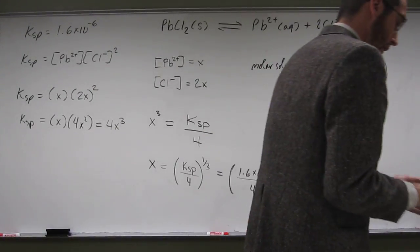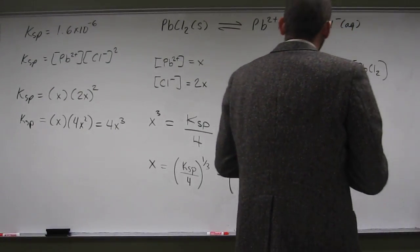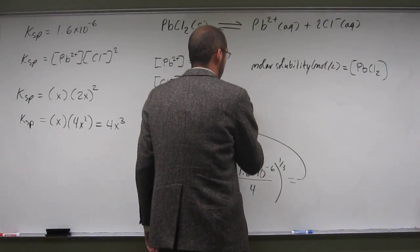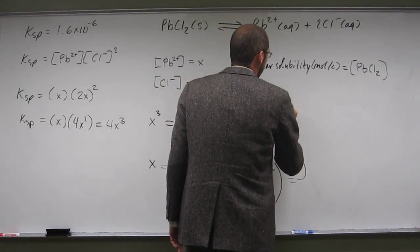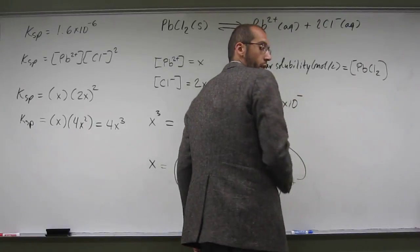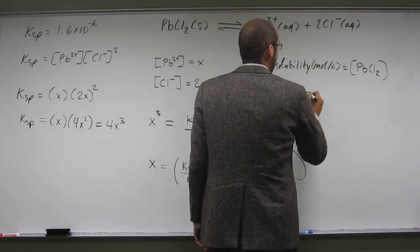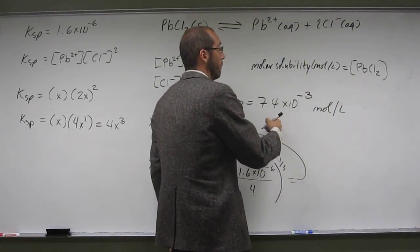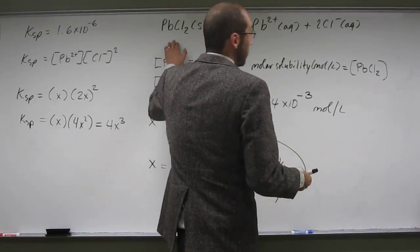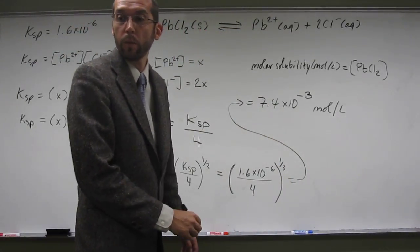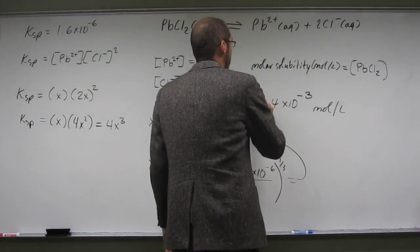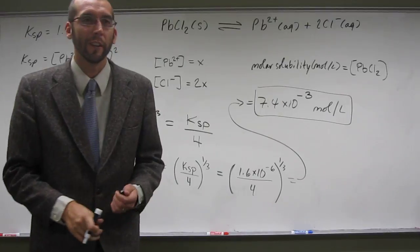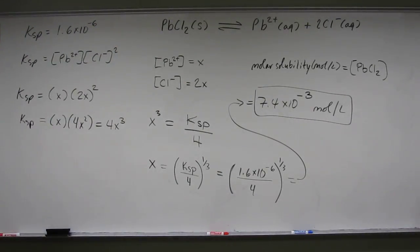And so, I got 7.4 times 10 to the negative 3 moles is the molar solubility of lead 2 chloride at, what did we see? It didn't even give us the temperature, at whatever temperature that is. Does that make sense? I think we beat these problems into the ground. Do you want to kill that one? Sure. Are there any questions? No.